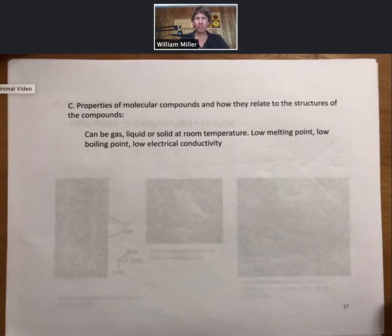We just talked about nomenclature of binary molecular compounds and different carbon, hydrogen, and oxygen-containing compounds and groups within them. Now let's talk about the properties of molecular compounds and how they relate to the structures of the compounds.